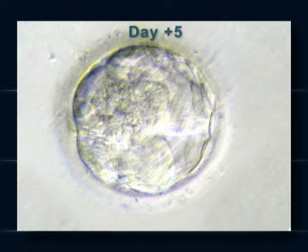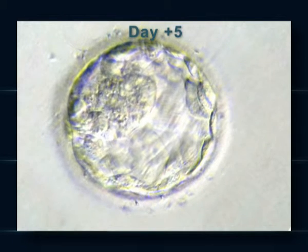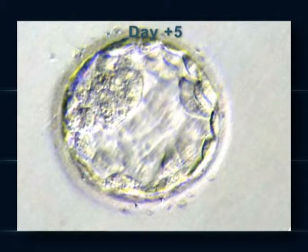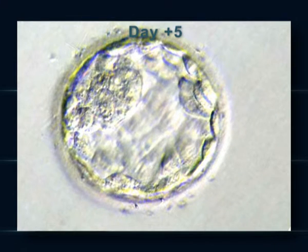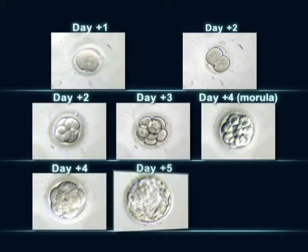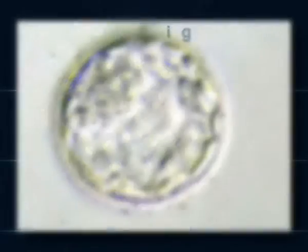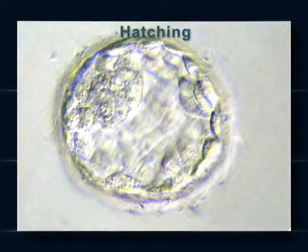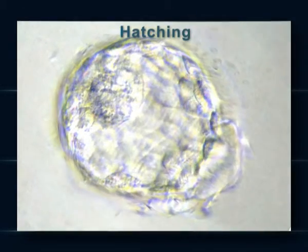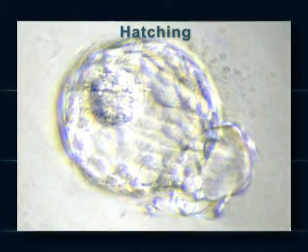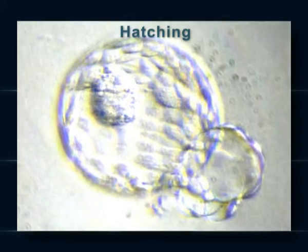On day five, the embryo contains more than 100 cells. In the center, there is a fluid-filled cavity. Finally, the blastocyst will shed the membrane that surrounds it. This is called hatching.